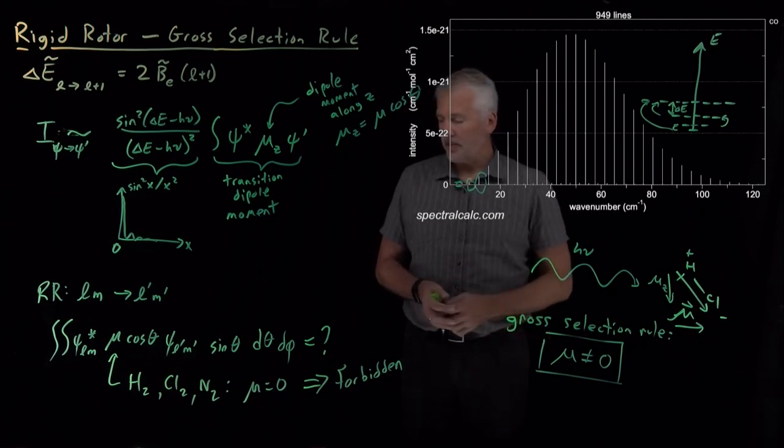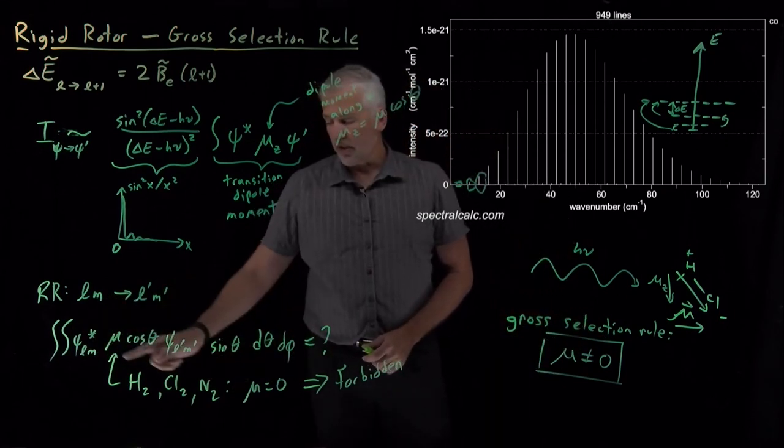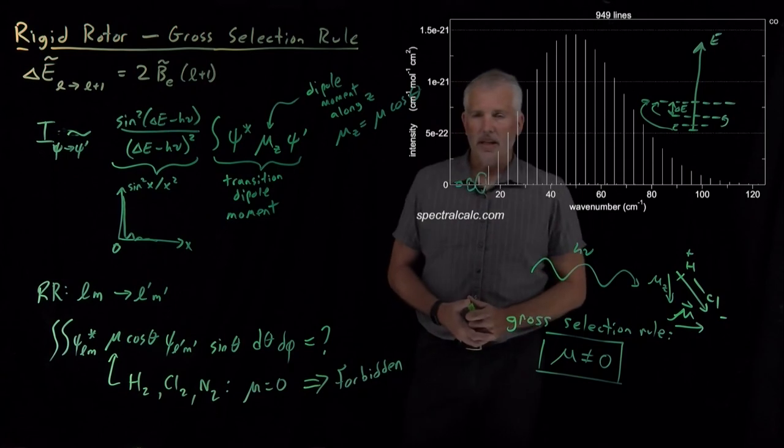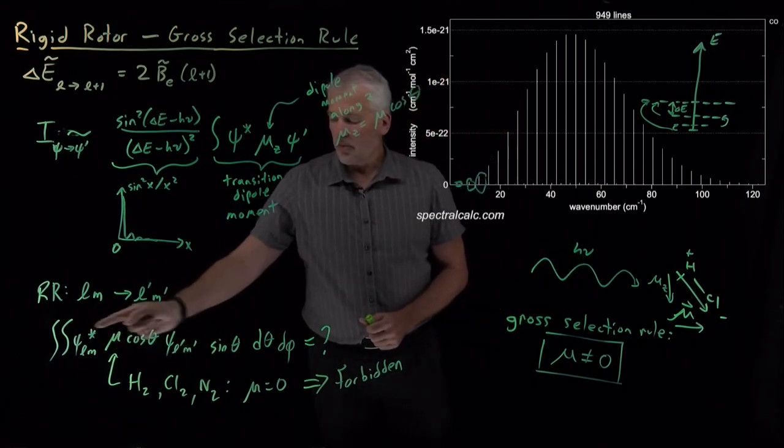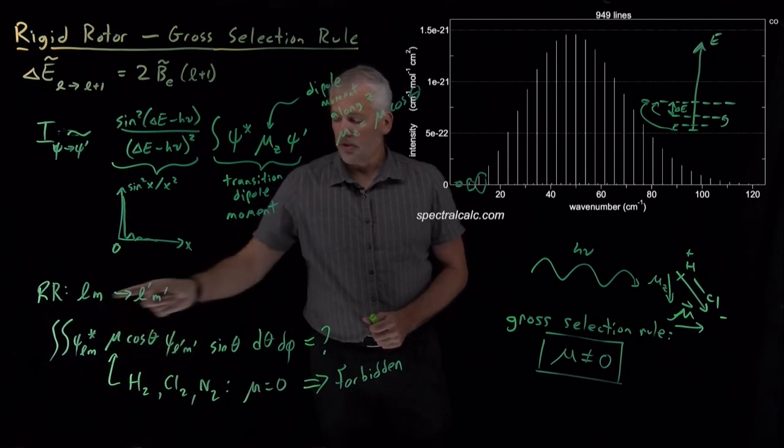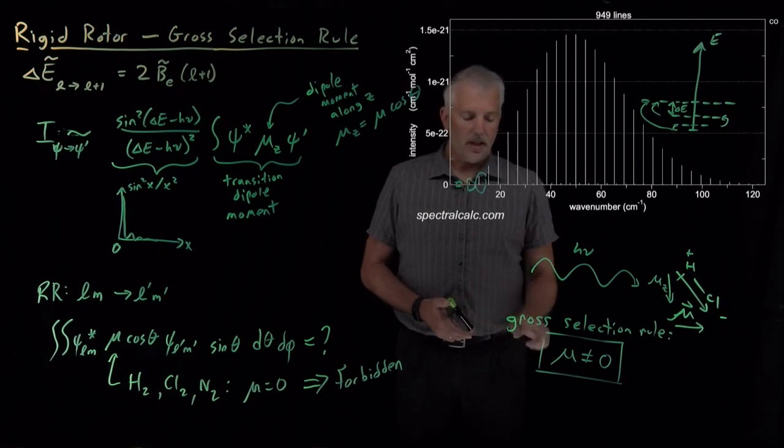So this raises the question of, are there other ways to make this integral zero, and in fact there are. So that's the next thing we'll talk about is a slightly more complicated question of what do these wave functions have to be in order to make this integral equal to zero or not equal to zero, and that will be not the gross selection rule, but another flavor of selection rule.